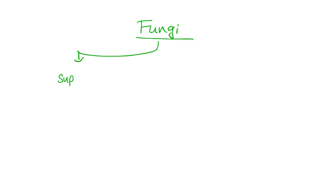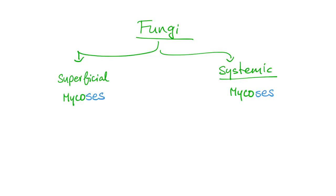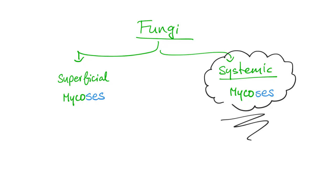There are many ways to classify fungi. We can divide fungi into superficial mycoses, which affect the skin, and systemic mycoses, which affect the whole body and many organ systems. Mycosis — singular, mycoses plural — comes from 'myco' meaning fungus and 'osis' meaning condition. Mycology is the scientific study of fungi. Today, we will talk about four systemic mycoses: histoplasmosis, blastomycosis, coccidioidomycosis, and paracoccidioidomycosis.